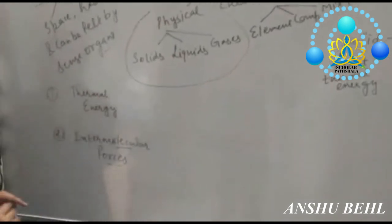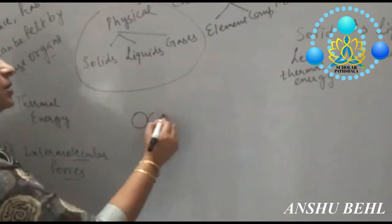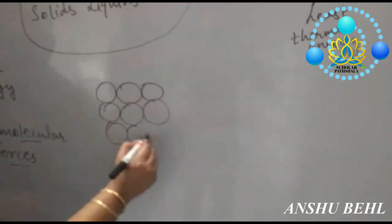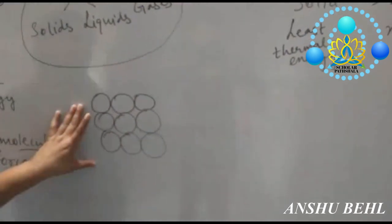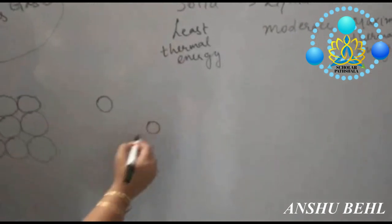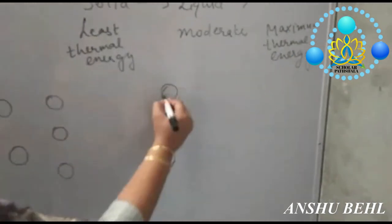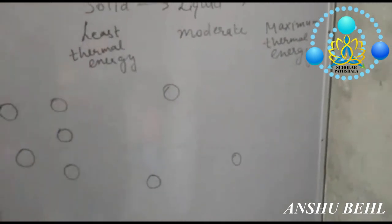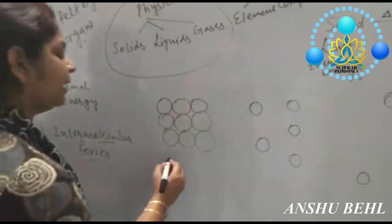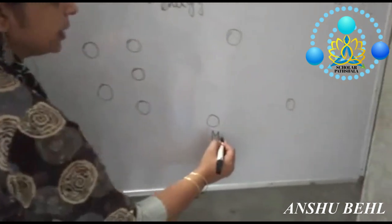The second factor to decide the state of a substance is intermolecular forces of attraction. In solids, particles are closely placed, so they have very strong forces of attraction with no gaps between them and particles cannot move from one place to another. In liquids, particles are a bit further apart, so forces of attraction are less. In gases, particles are very far from each other, so forces of attraction are least. Therefore, intermolecular forces are maximum in solids and minimum in gases.